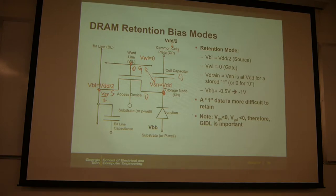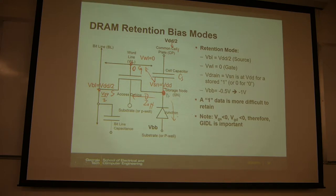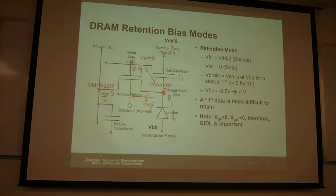Of course, other mechanisms also discharge this node: PN junction leakage to the substrate, and also the transistor off-current. This is the total leakage current to this node. Storing a '1' is more problematic because VDD gives a negative VGD, causing GIDL current, and also reverse PN junction current. If you store a '0', the situation is better — gate and drain are at the same potential, so there is no GIDL. Also, the PN junction voltage difference is small. So storing '1' is the more problematic case.